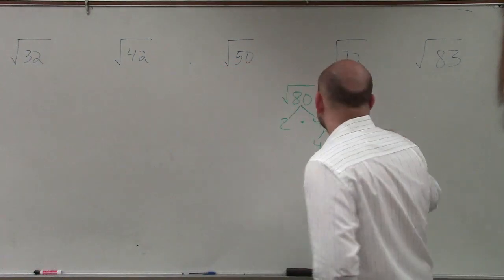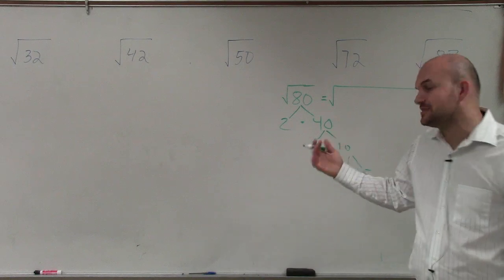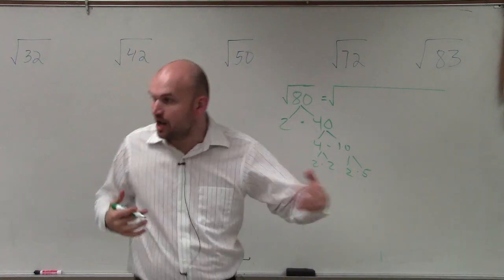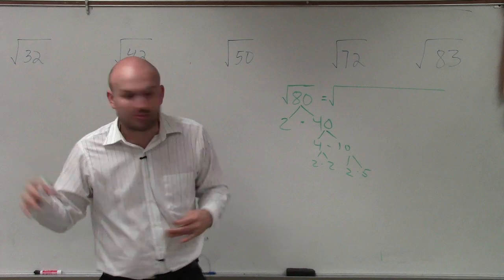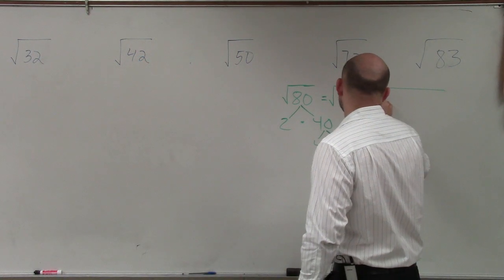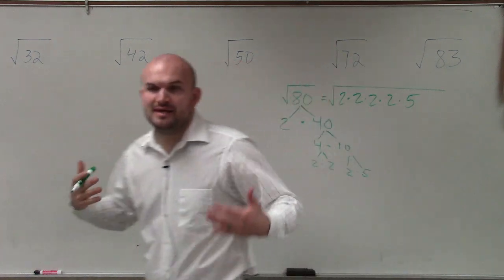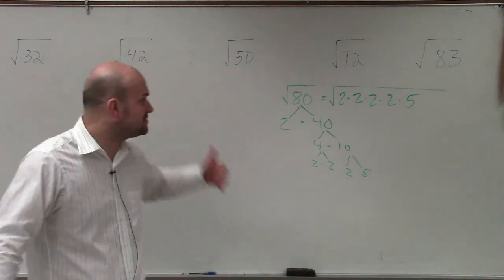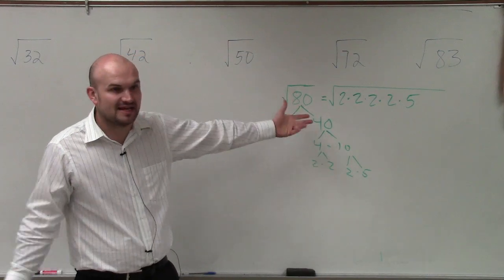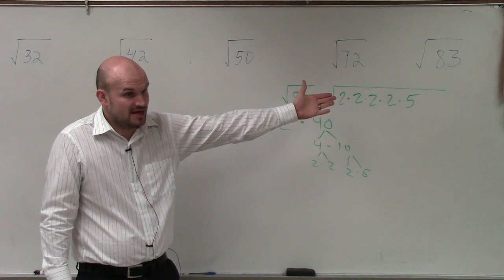What you are going to get is the same factorization. What we want to do is write it as prime factors, meaning all the factors are prime numbers. And basically what we have is 2 times 2 times 2 times 2 times 5. Would you guys agree that 2 times 2 times 2 times 2 times 5 is the same thing as 80? It's just one is written as a product, and the other is just your number.